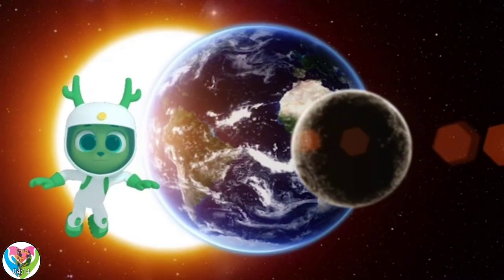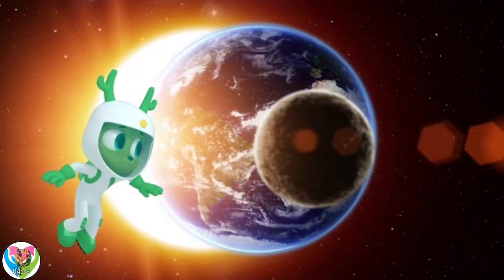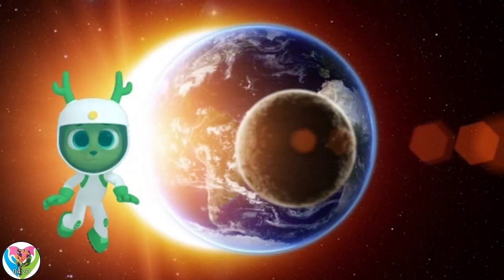As the Earth orbits the Sun, it sometimes gets in between the Sun and the Moon and blocks out the sunlight. That's called the Lunar Eclipse.